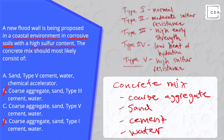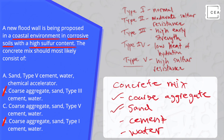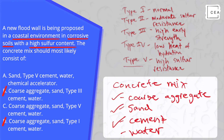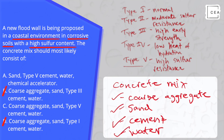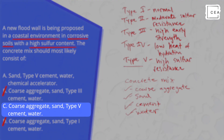Looking at the answer choices, answer choice C contains coarse aggregate, sand, Type 5 cement — which we said was the best suited type of cement for this project — and water. Answer choice A does not contain coarse aggregate. So answer choice C is the correct answer for this problem.